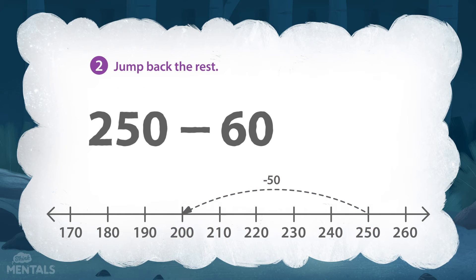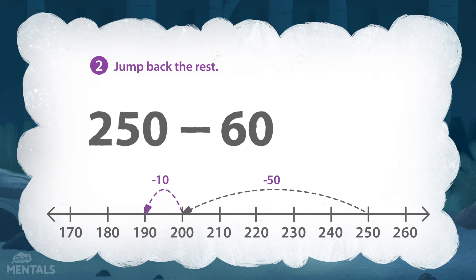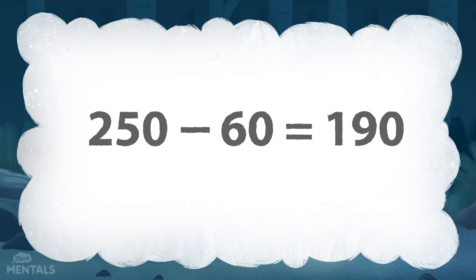Step two is to jump back the rest. How much more do we need to jump back to finish the calculation? That's right — because fifty and ten more equals sixty. Jumping back ten from two hundred gets us to one hundred and ninety. So, two hundred and fifty minus sixty is one hundred and ninety.